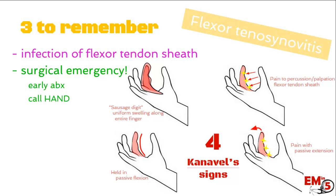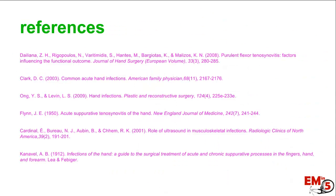Three things to remember for flexor tenosynovitis: it's an infection of the flexor tendon sheath, usually caused by a puncture injury. It is a surgical emergency, so start early IV antibiotics and call hand surgery. And remember the four Kanavel signs: swelling of the entire digit (sausage digit), pain to palpation along the flexor tendon sheath, passive flexion posture, and pain with passive extension. Thanks for joining us on EM in 5.